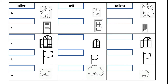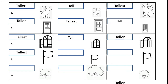Number two: name the tallest object first, then find the taller one — write 'taller' with double L — and the last one will be 'tall.' Number three is a window — spell it out: T-A-L-L-E-S-T for the tallest, then the taller, and the last one is 'tall.' Number four is a flag — name the tallest first, then compare: taller first and the last one is 'tall.' Excellent!